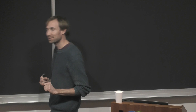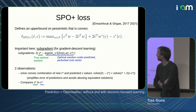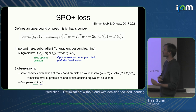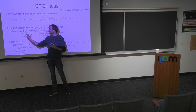I'll start with the seminal work of Paul: the SPO+ loss function. One part of the paper defines an upper bound on the pessimistic view and proves that this upper bound is convex — a very nice result. Most importantly, there's a very elegant subgradient. You take two times the true optimal solution, take the predictions, slightly perturb those predictions, call the solver, and get another solution. By taking the difference between those two solutions, you get the subgradient.